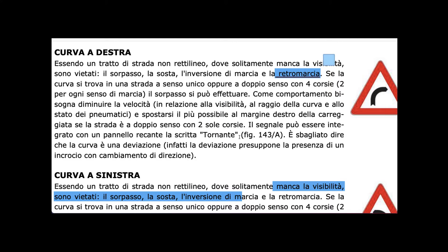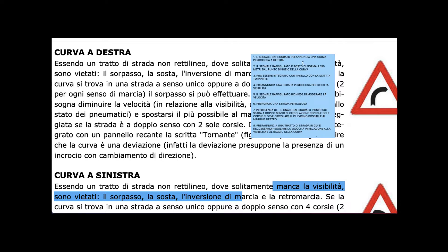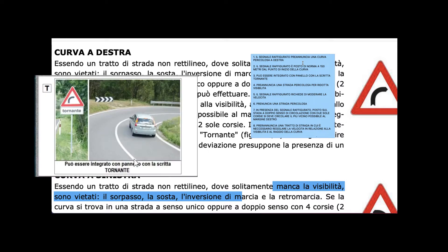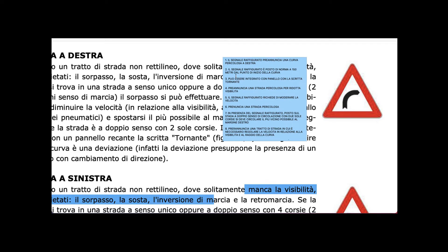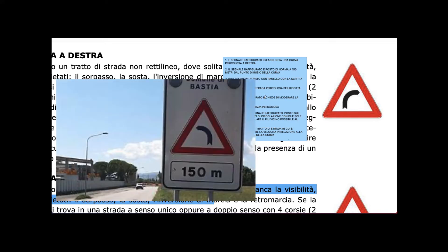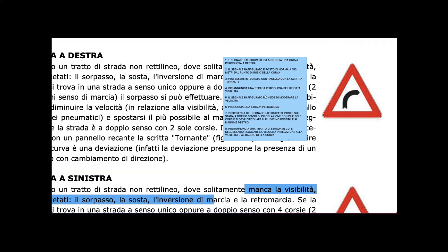'Tornante' means a series of curves, which we normally see on mountains or areas with multiple curves. The sign announces a dangerous curve to the right — 'curva pericolosa a destra'. This sign is placed normally 150 meters from the start of the curve, and can be integrated with a panel marked 'tornante' indicating a series of curves ahead.